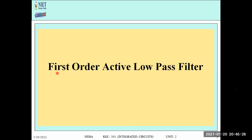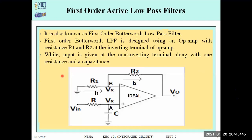The circuit shown on screen is the first order active low pass filter. To increase the order, we increase the RC combination — for second order we use two resistors and two capacitor combinations. Active means we use active components: resistor, capacitor, and op-amp. Remember, we cannot use inductors in active filters — inductors are only used in passive filters.